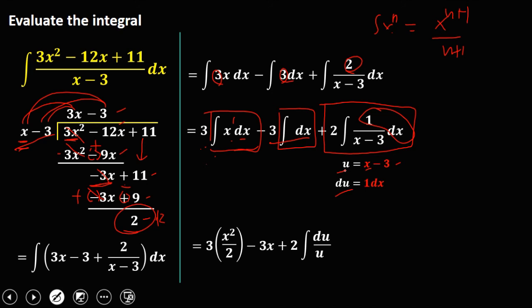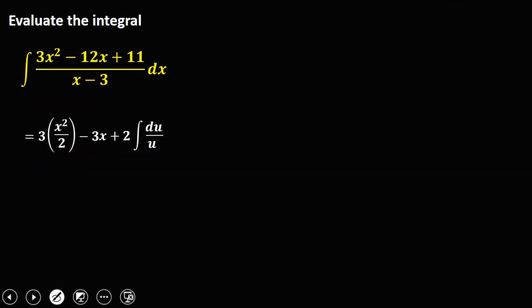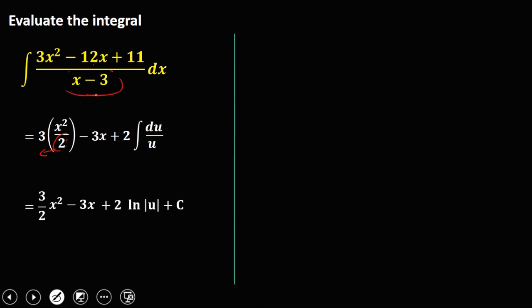Simplifying using the power rule and logarithm formula: 3 times x squared over 2 minus 3x plus 2 ln of the absolute value of u, plus c. Substituting u equals x minus 3, the final answer is three-halves x squared minus 3x plus 2 ln of the absolute value of x minus 3, plus c.